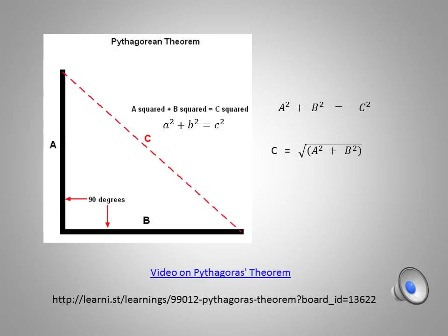What that really means is that if we were to put a square with sides equal in length to A, and another square with sides equal to B, those two areas together would be equal to the area of the square on side C. There's a short video link here that you can see how this graphically works. So with A squared plus B squared equals C squared, C will be equal to the square root of A squared plus B squared.